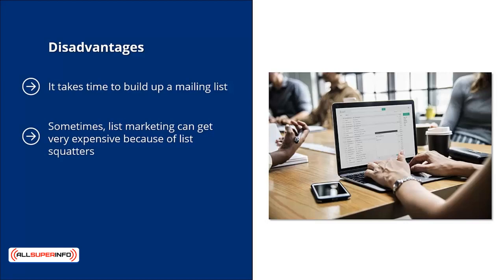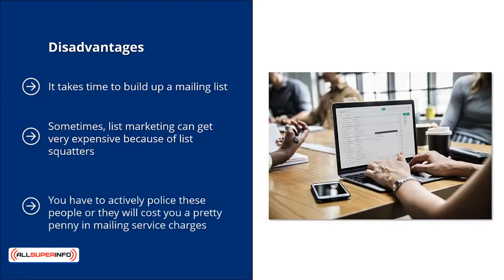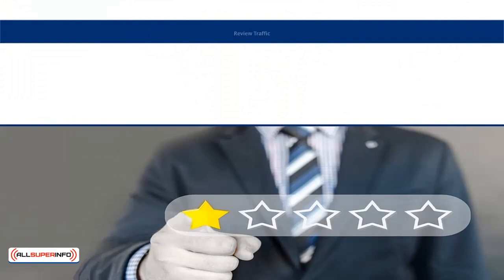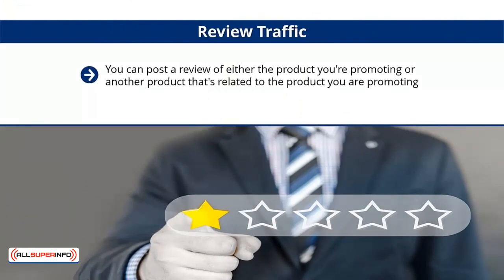Disadvantages: it takes time to build up a mailing list. List marketing can also get expensive because of list squatters — people who join your mailing list but never unsubscribe despite having stopped reading your updates. You have to actively police these people or they will cost you money, since most email systems charge based on list size, not open rates. Systems like AWeber enable you to identify and purge members who haven't opened your emails.